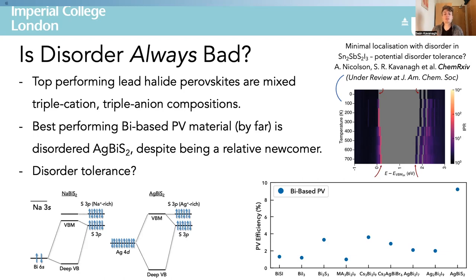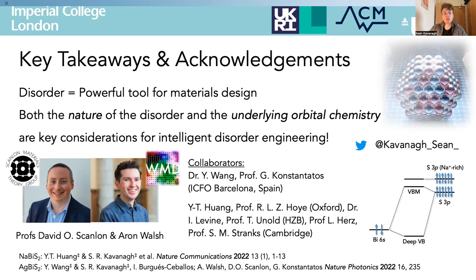It seems that certain materials can exhibit a disorder tolerance analogous to defect tolerance, and with greater understanding of this phenomenon we could potentially tame disorder as a powerful tool for materials design — opening up the possibility of fine-tuning performance across a range of applications, not just photovoltaics but also thermoelectrics or LEDs. The main conclusions are that disorder presents a powerful tool to tune materials properties and optimise performance, but both the nature and distribution of disorder and the underlying orbital chemistry are key considerations for the intelligent design of emerging photovoltaic materials.